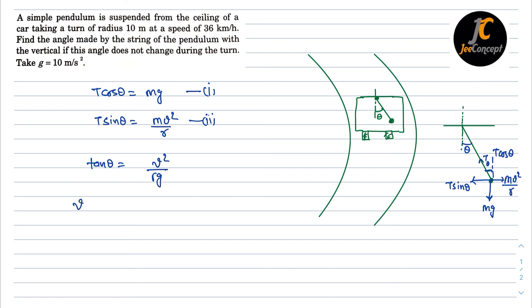Now the value of v is given as 36 km per hour. So let it convert into meter per second. So this will become 10 meter per second. Now the radius of the track is given as 10 meter. So let's put the value here. So this theta or the tan theta is going to be v square is 10 square upon r is 10 and g is also 10. So this will become 1. So that means theta is 45 degree. So this is the solution of this problem.